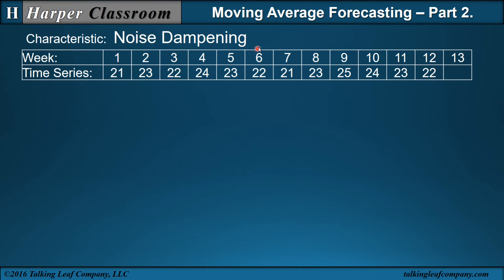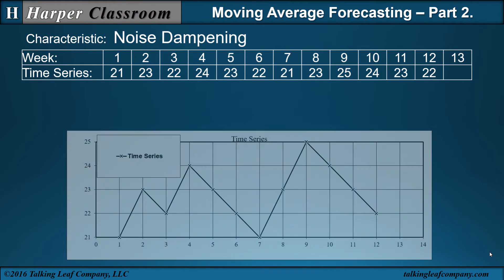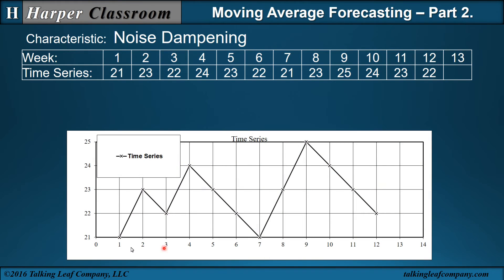Next, we have noise dampening. Here we have a weekly time series. If we plot it, we can see it does have an increase and decrease. If those changes are important, they're impulses. If they're not important, they're called noise, or random error, or randomness, or volatility.